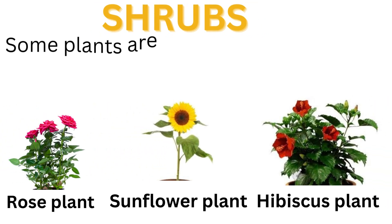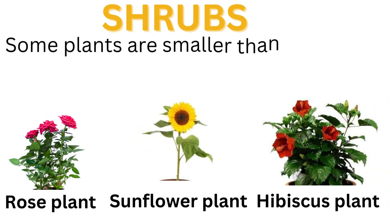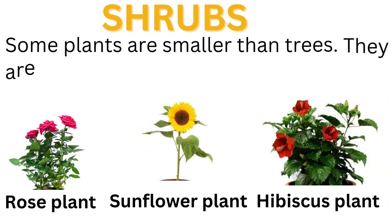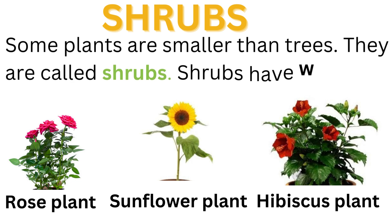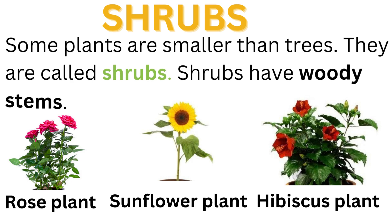Shrubs. Some plants are smaller than trees. They are called shrubs. Shrubs have woody stems. Examples include rose plant, sunflower plant, and hibiscus plant.